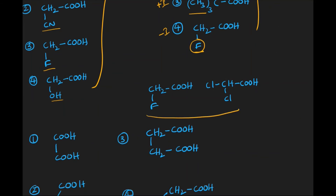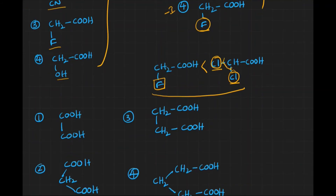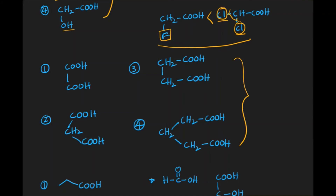When comparing one -I group versus two -I groups: even if fluorine alone is a strong -I group, having two -I groups pulls more electrons, decreasing the charge on the conjugate base more, making the compound with two -I groups more acidic. For the oxalic acid series (oxalic, malonic, etc.), as CH₂ groups increase, the +I character increases, decreasing conjugate base stability and acidic nature: order is 1 > 2 > 3 > 4.